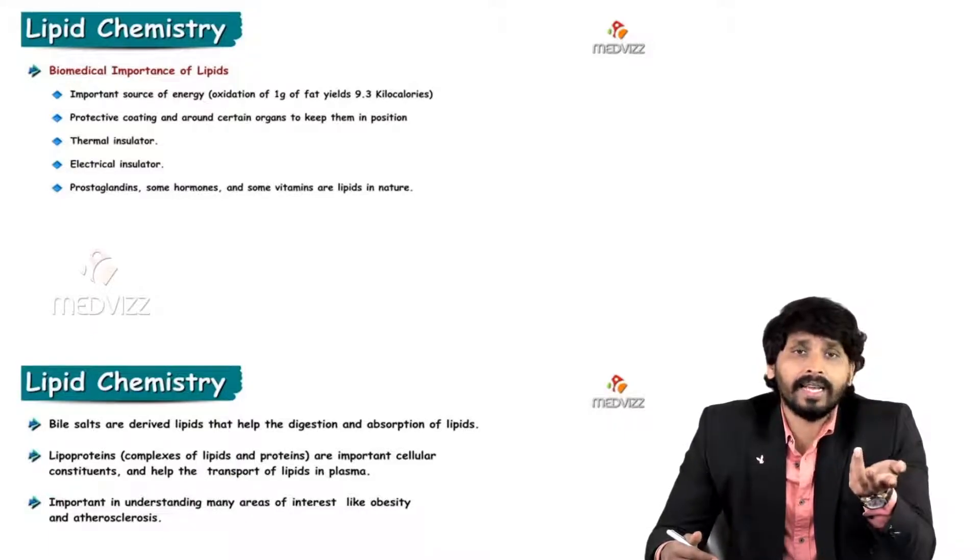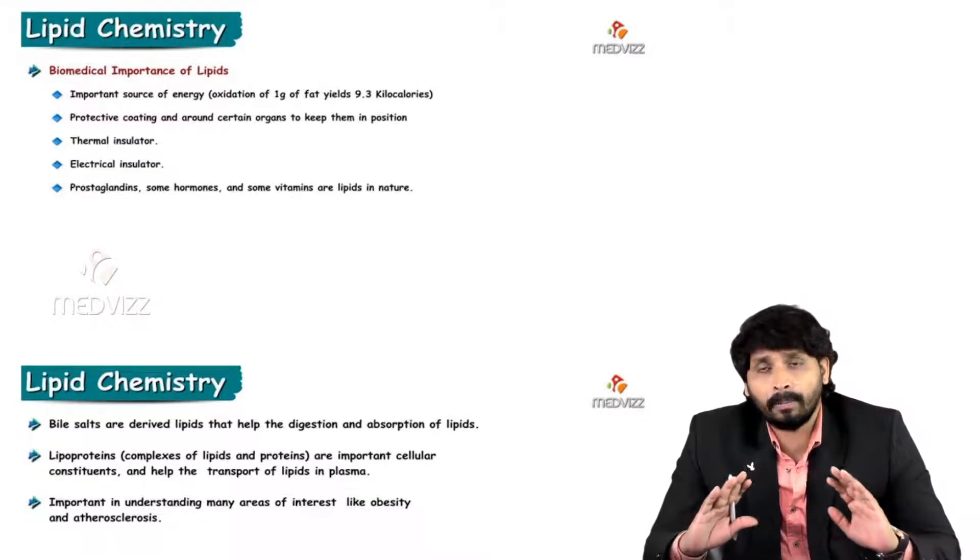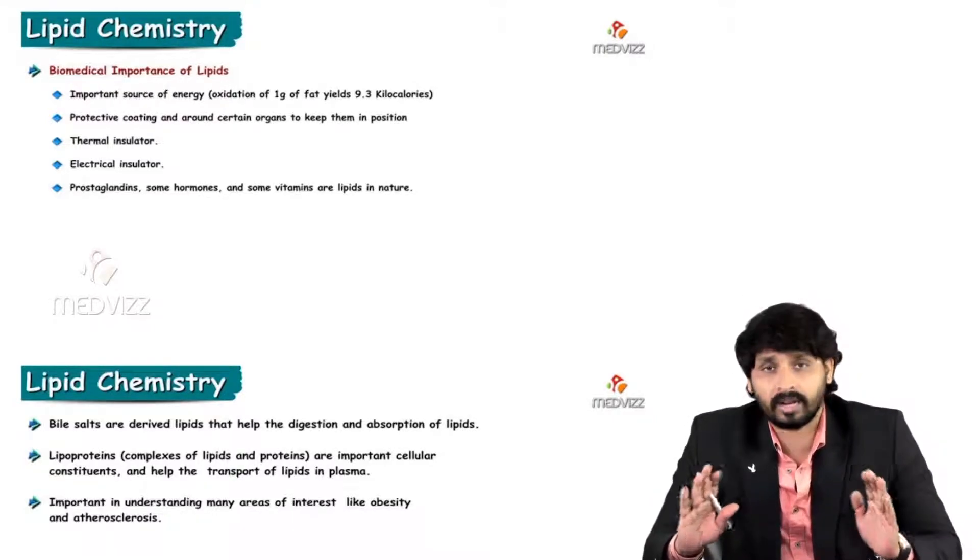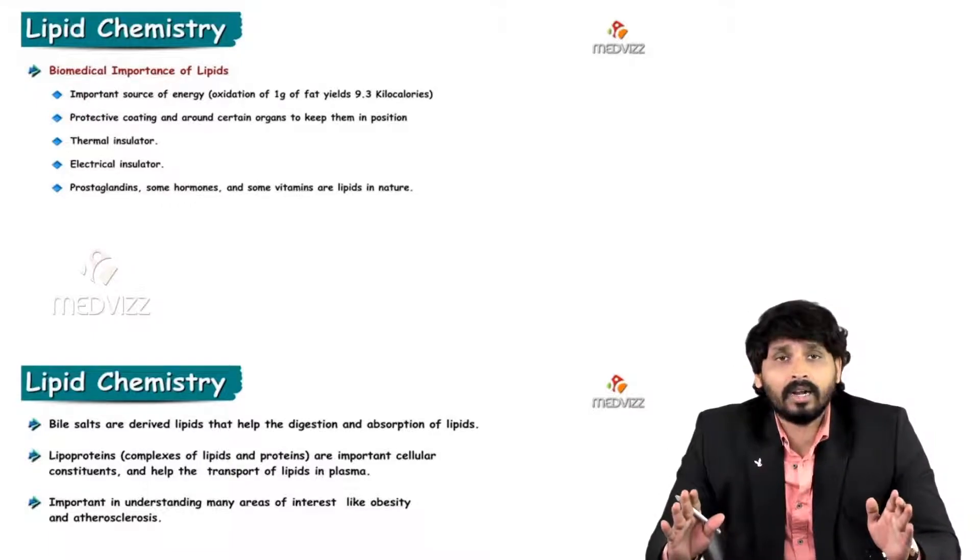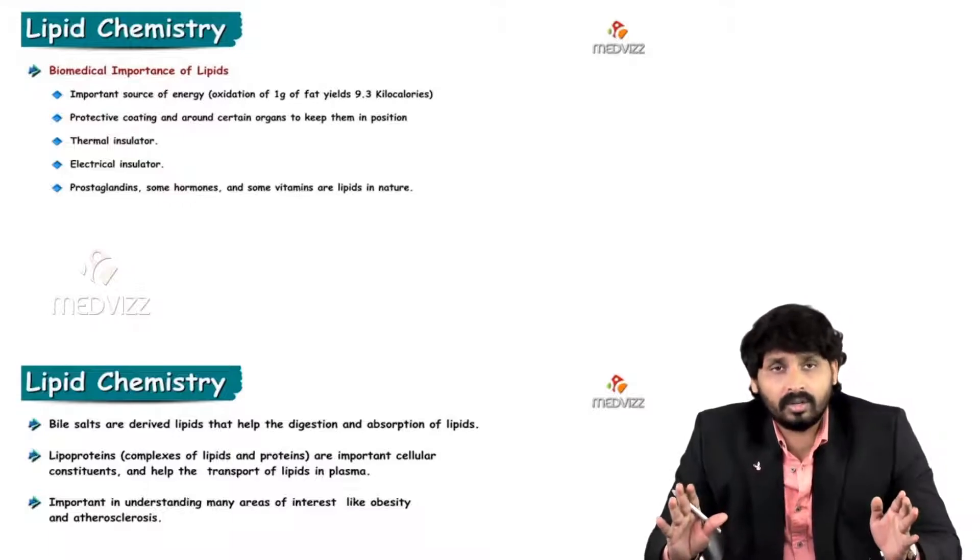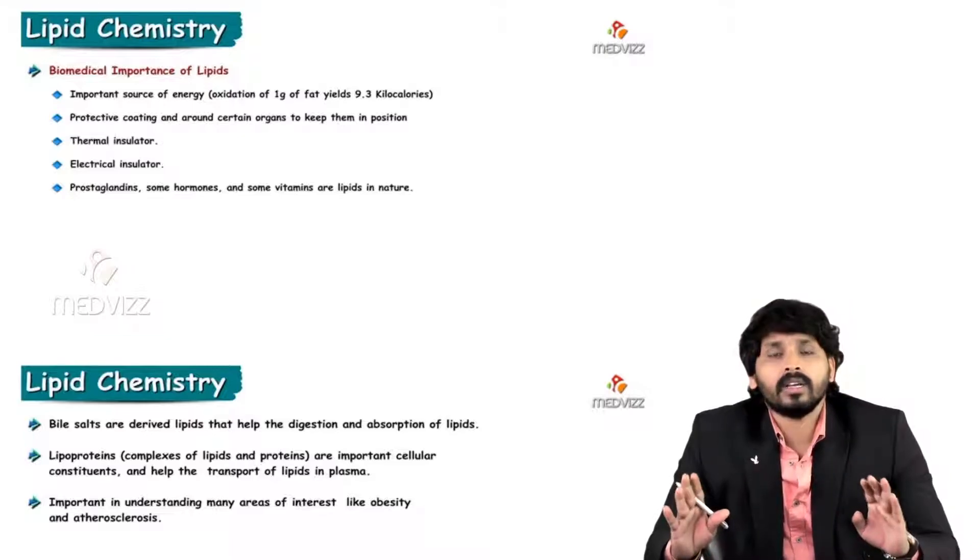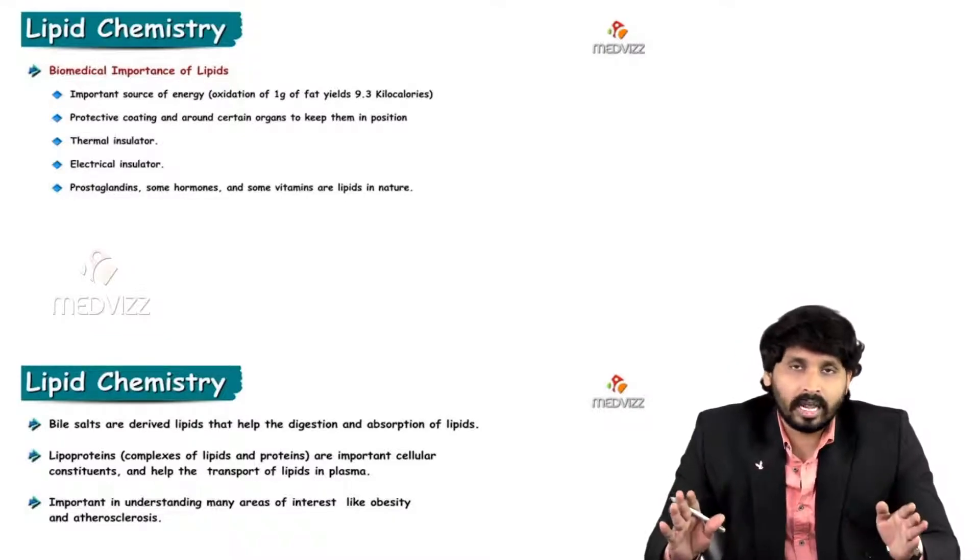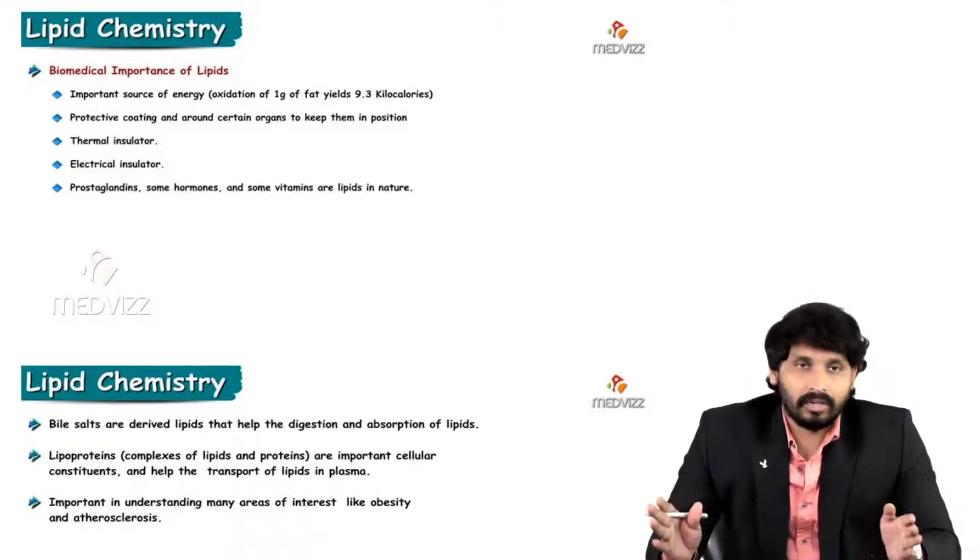They act as a protective coating, forming an insulation layer or paddy layer around certain organs like liver, pancreas, and spleen. They also serve as thermal insulators under skin, preventing environmental changes like cold or warm climate, and as electrical insulators.